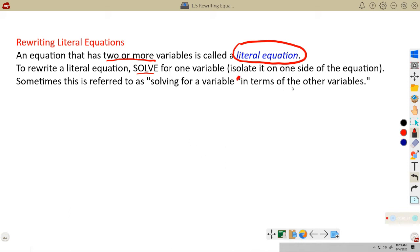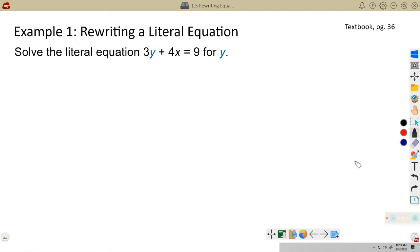Solving for a variable in terms of the other variables. In other words, that means we're going to get a certain variable alone on one side of the equation. We're solving for that variable, just like we would solve a regular equation. So what's that going to look like? Let's take a look. Example one, rewriting a literal equation. I've got this literal equation. I'm going to rewrite it here and give myself a little more room.